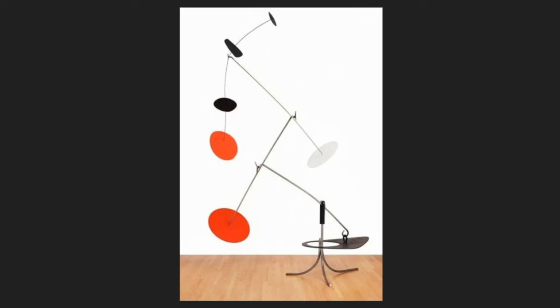Calder was curious about the shapes he saw around him in nature, just like you might be. In nature, lines and shapes are irregular, just like most of the shapes in Three Blacks Over Red.